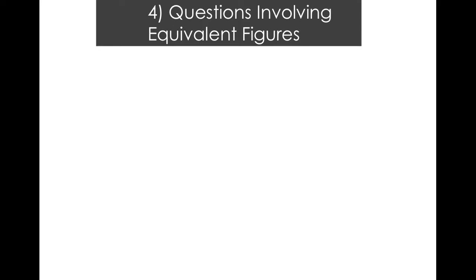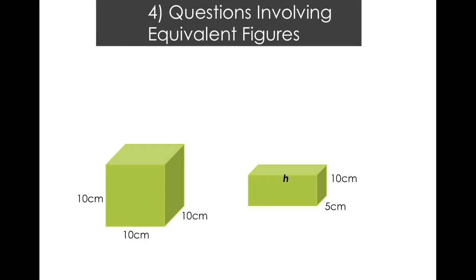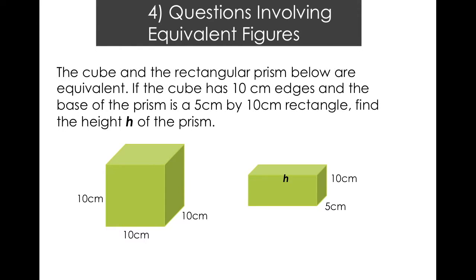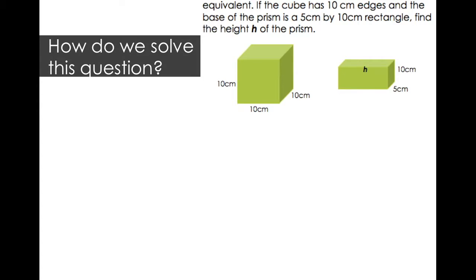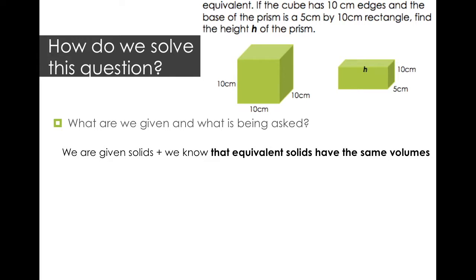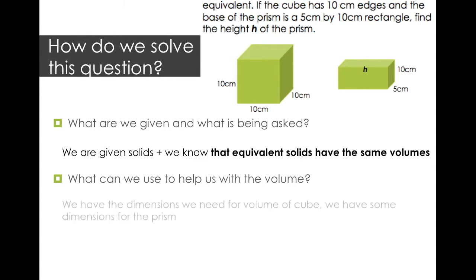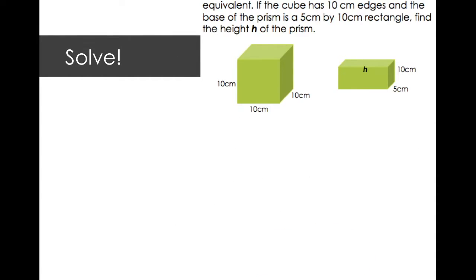Here are some types of questions that you might have seen involving equivalent figures. Here is a cube and here is a rectangular prism. The cube and the rectangular prism below are equivalent. If the cube has 10 centimeter edges and the base of the prism is a 5 centimeter by 10 centimeter rectangle, find the height of the prism. We are given two solids and we know they are equivalent, so equivalent solids have the same volumes.